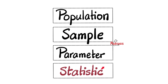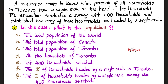And what better way to define our terms than by using a Socratic dialogue — question and answer. So let's start with this case. A researcher wants to know what percent of all households in Toronto have a single male as the head of the household. The researcher conducted a survey with 400 households and established how many of these households are headed by a single male. In this case, what is the population?